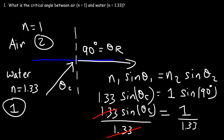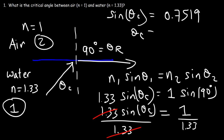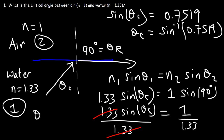Sine 90 equals 1, so we divide both sides by 1.33. One divided by 1.33 is 0.7519, and so that equals sine of the critical angle. To calculate the critical angle we take the arc sine of 0.7519, which gives us a critical angle of 48.76 degrees. That is the answer.